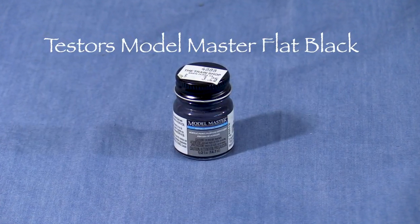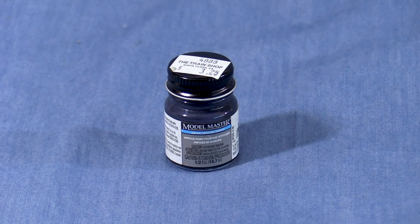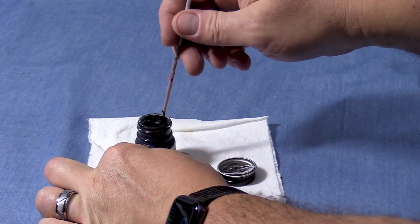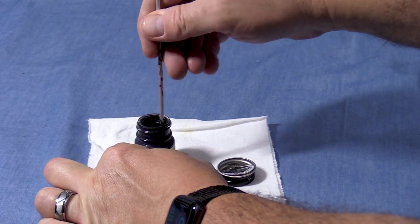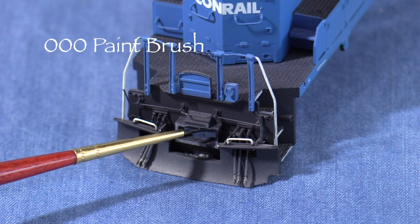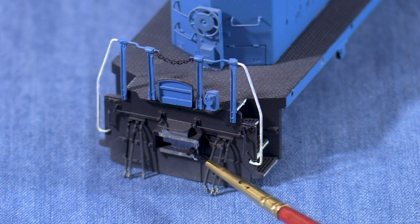Now I can touch up the paint. I'm using some Testors Model Master Flat Black, which unfortunately is out of production, but any flat black paint would work. I found some small pieces of aluminum rod at a hardware store a few years ago that make great paint stirrers. I'm using a triple zero brush to put some black on the edges of the coupler openings in the pilot, and to touch up the corners of the plow where I scraped the paint.